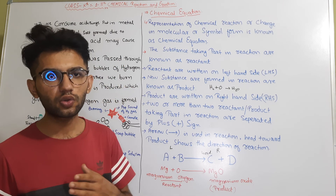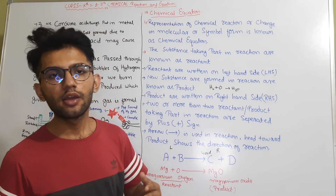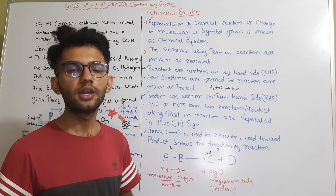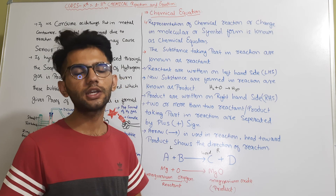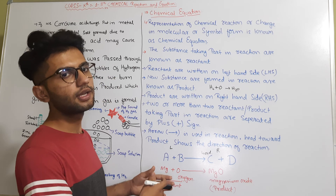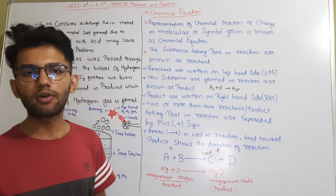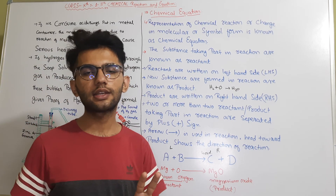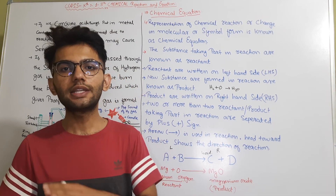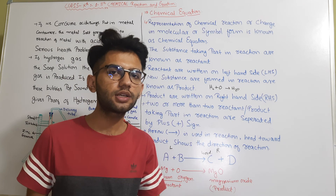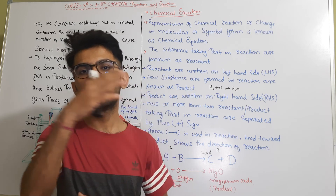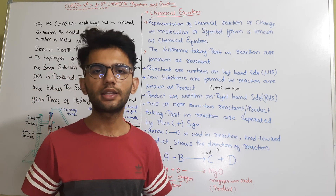The arrow represents the direction of the reaction — its tail is toward the reactant and its head toward the product. When the reaction goes toward the product, it is known as the forward reaction. If the products start converting back into reactants, that is the backward direction. So there are two directions in a reaction: forward direction, when reactants convert into products, and backward direction, when products convert back into reactants.